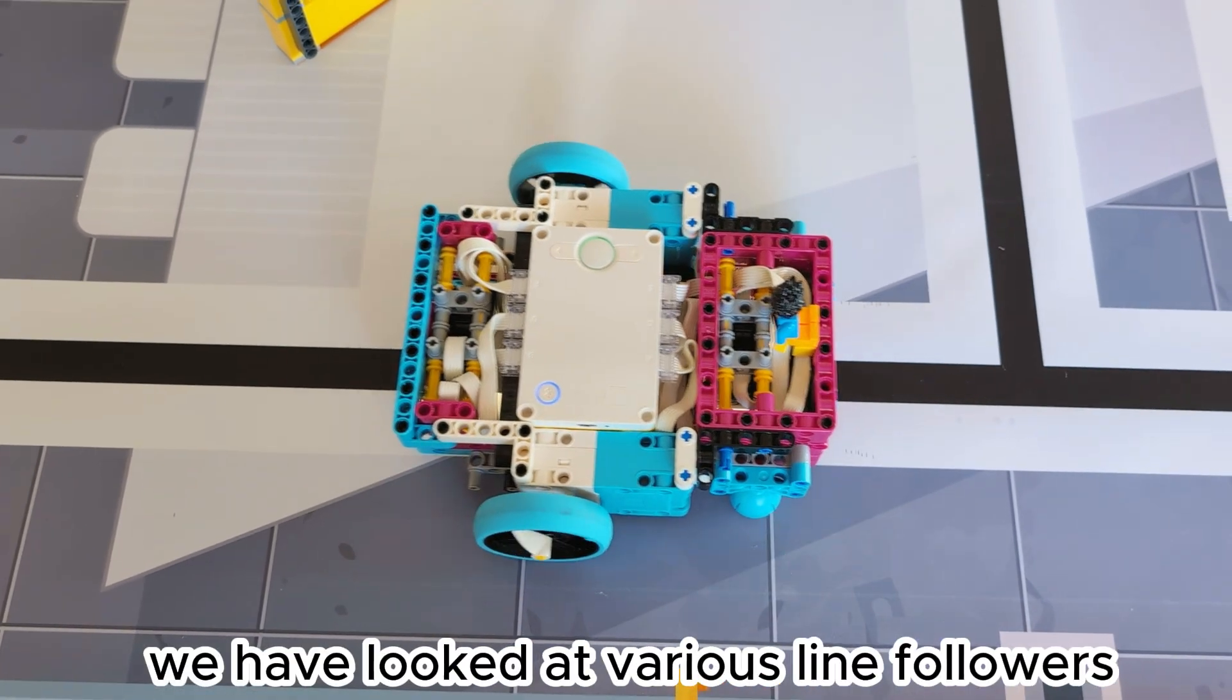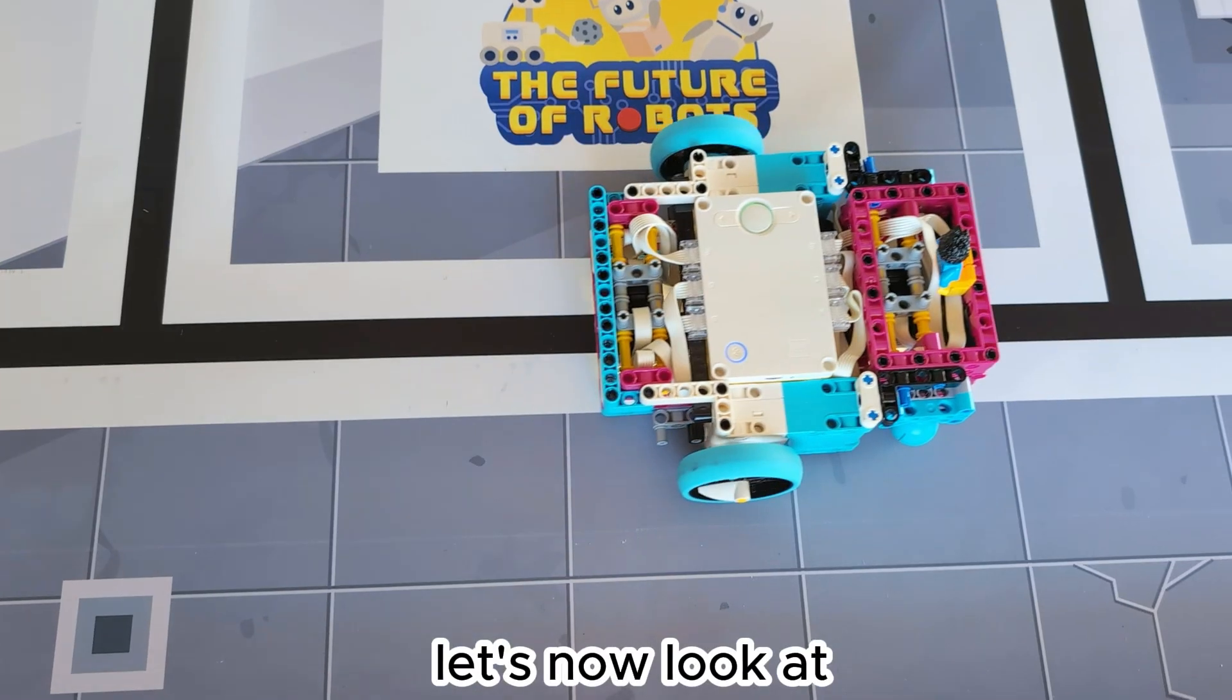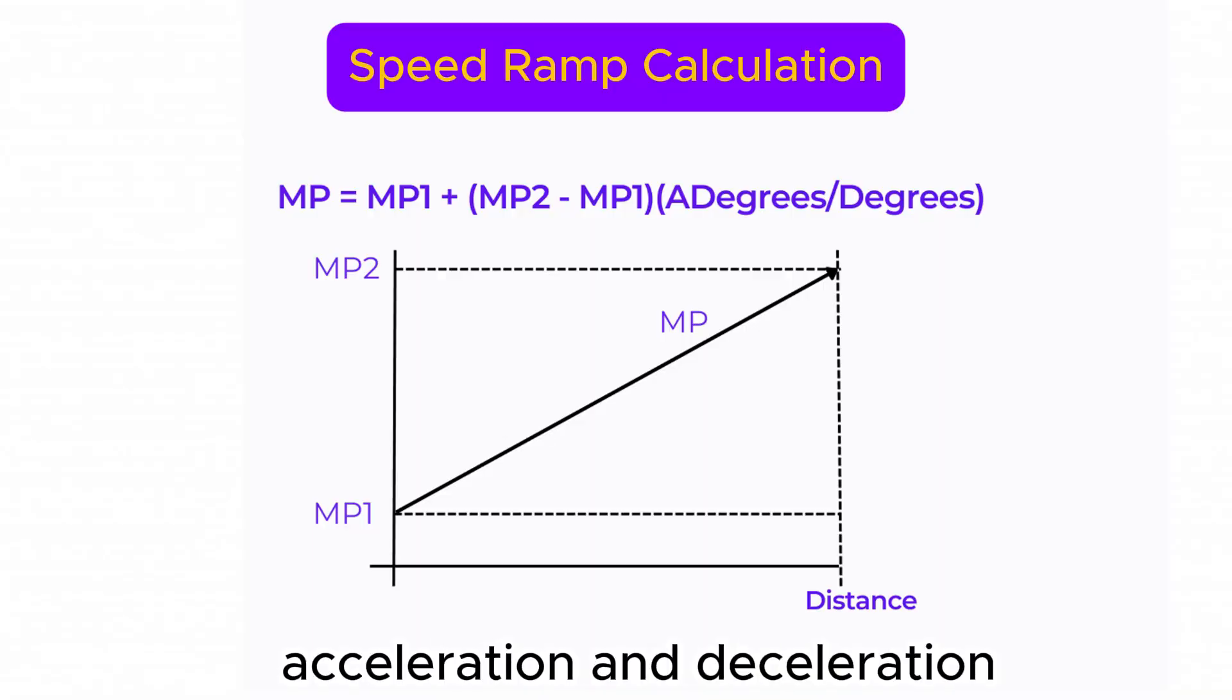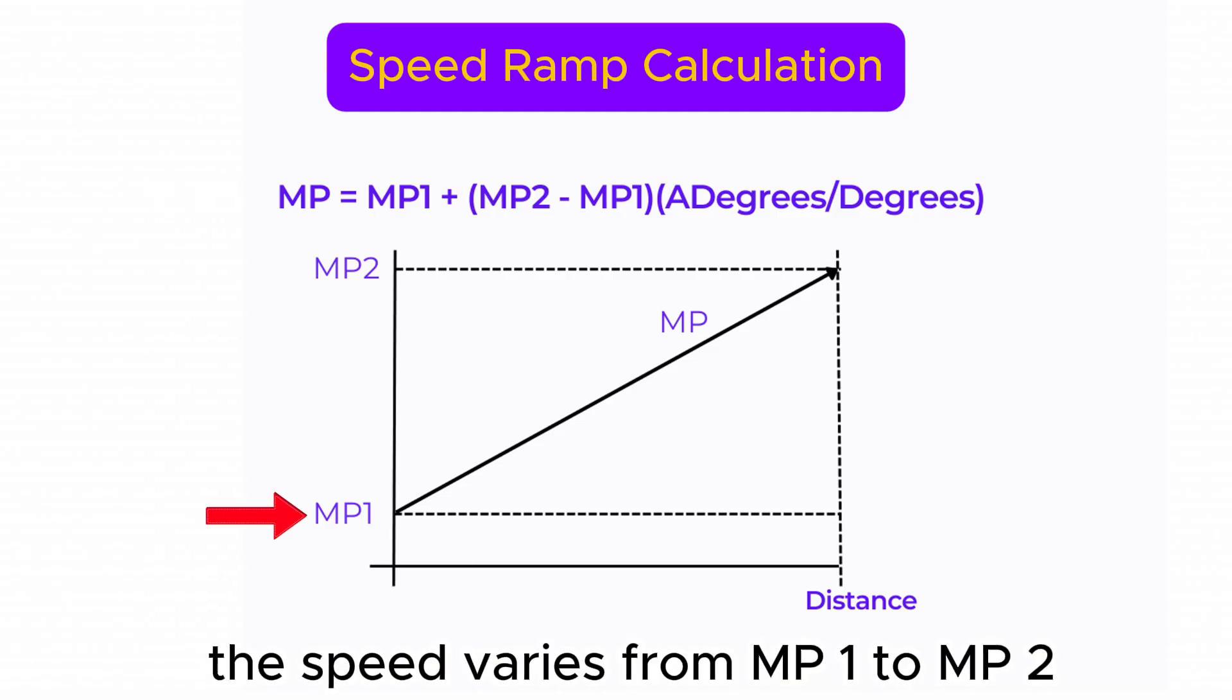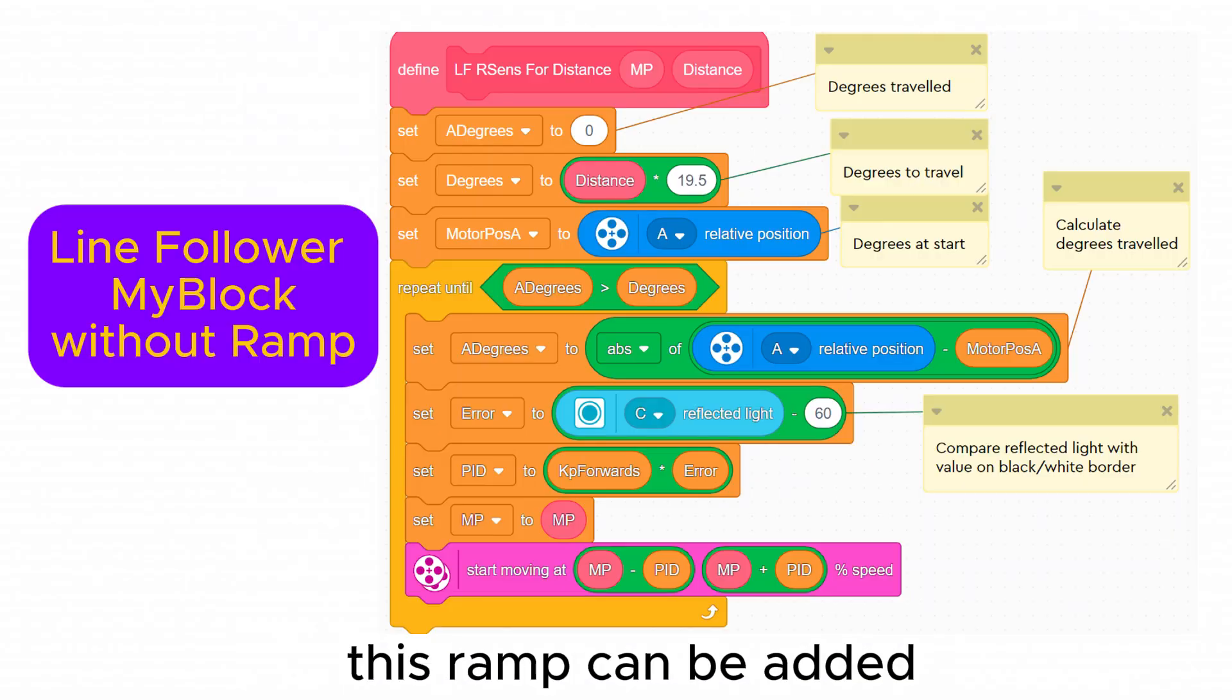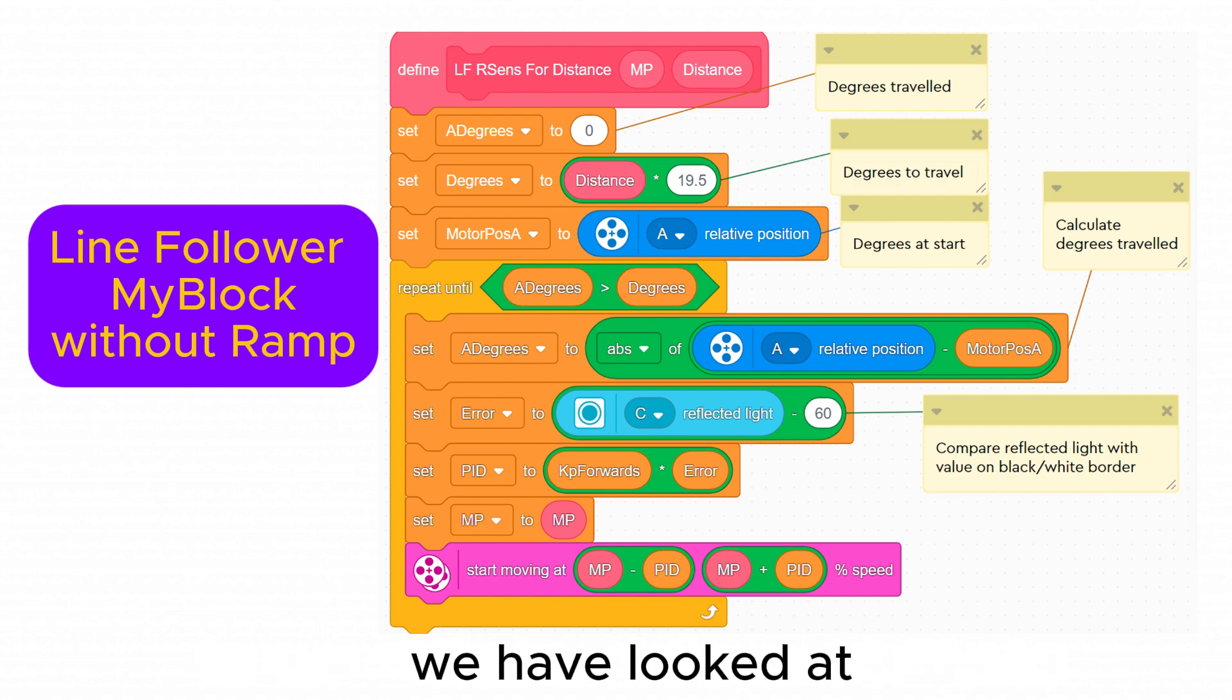Okay now we have looked at various line followers moving with fixed speeds let's now look at acceleration and deceleration. Instead of using a fixed value for motor power MP we calculate MP using this equation. The speed varies from MP1 to MP2 over the distance specified. This ramp can be added to any of the line follower my blocks we have looked at.